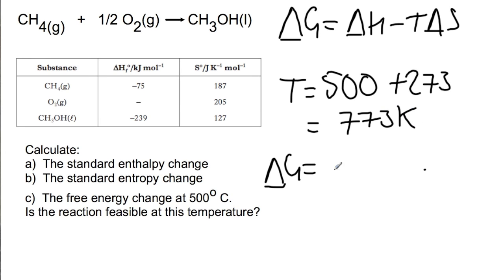Delta G will equal the enthalpy change from before which is minus 164 minus 773 multiplied by the entropy change which I'm dividing by 1000 to get into kilojoules.